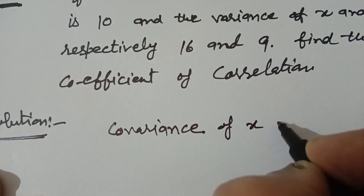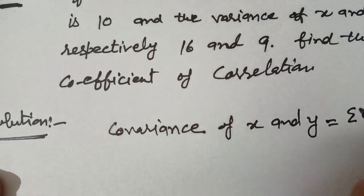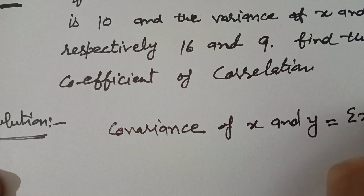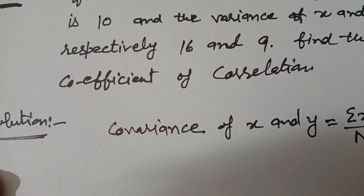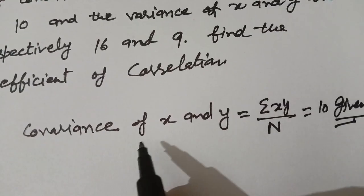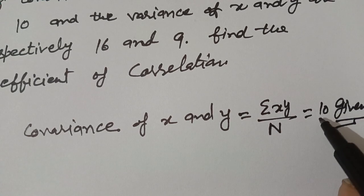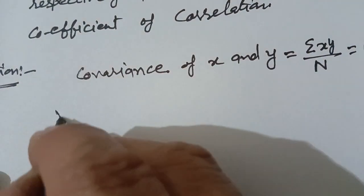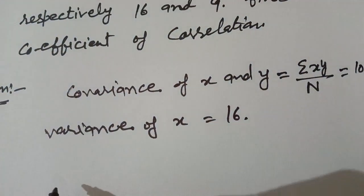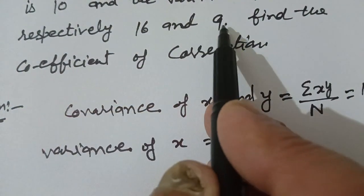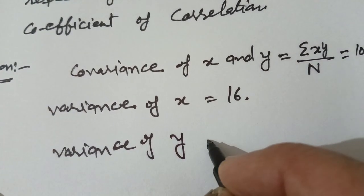The covariance of x and y is equal to summation of xy divided by n. This covariance is given as 10. The formula for covariance is summation xy over n, and this is given as 10. Variance of x is equal to 16 (given), and variance of y is equal to 9.